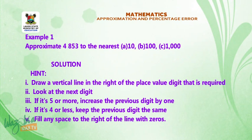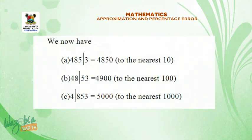Example 1. Approximate 4853 to the nearest A, ten, B, hundred, C, one thousand. Draw a vertical line in the right of the place value digit that is required. Look at the next digit. If it's 5 or more, increase the previous digits by 1. If it's 4 or less, keep the previous digits the same. Fill any space to the right of the line with zeros.